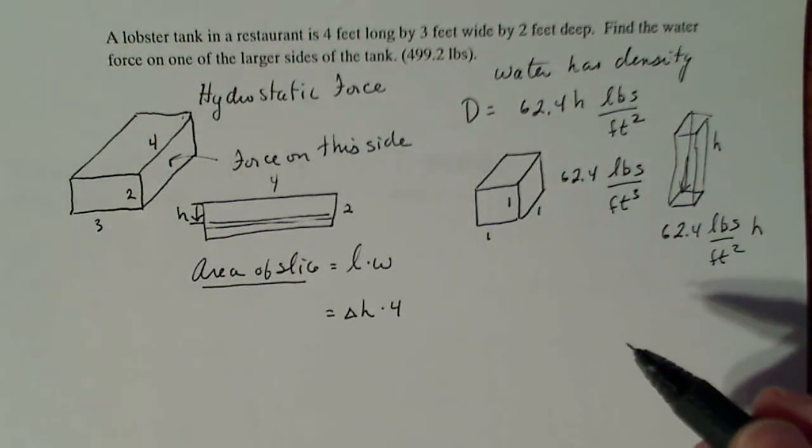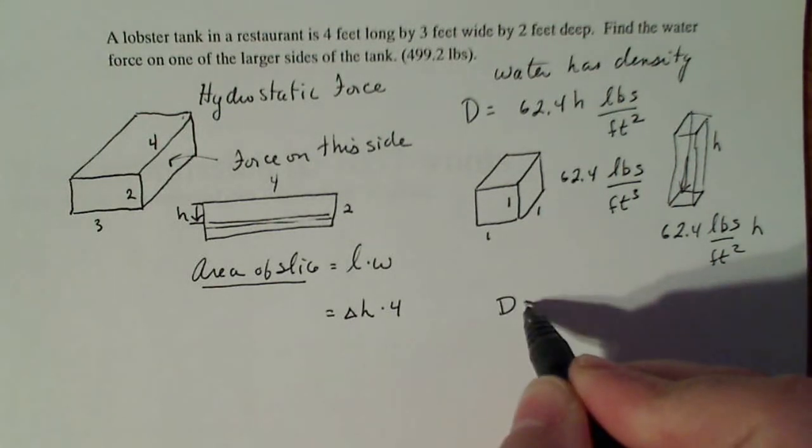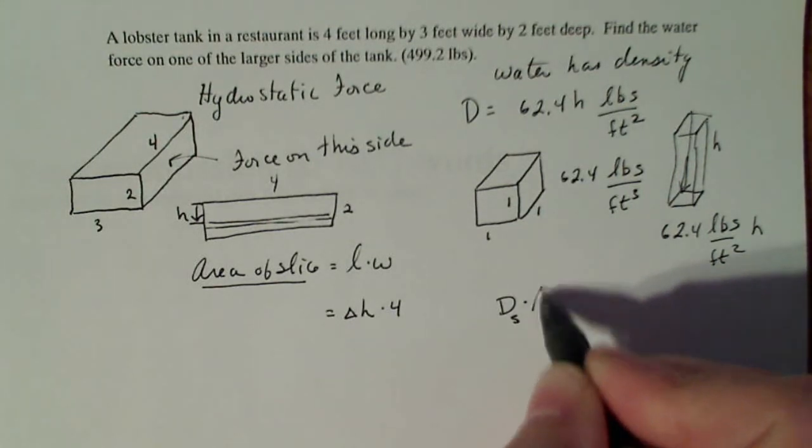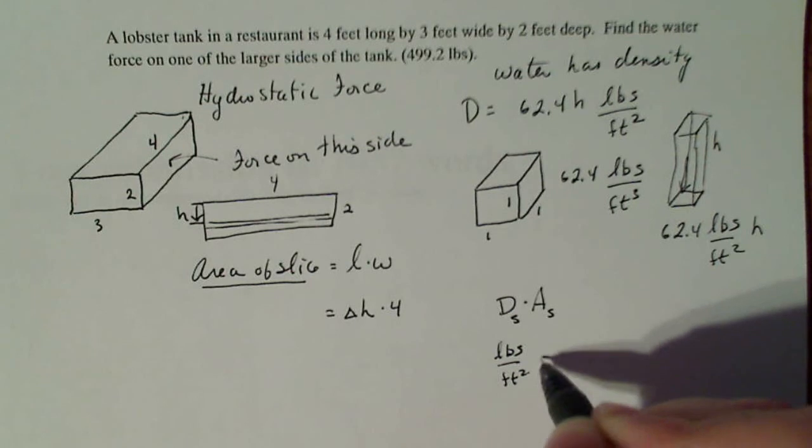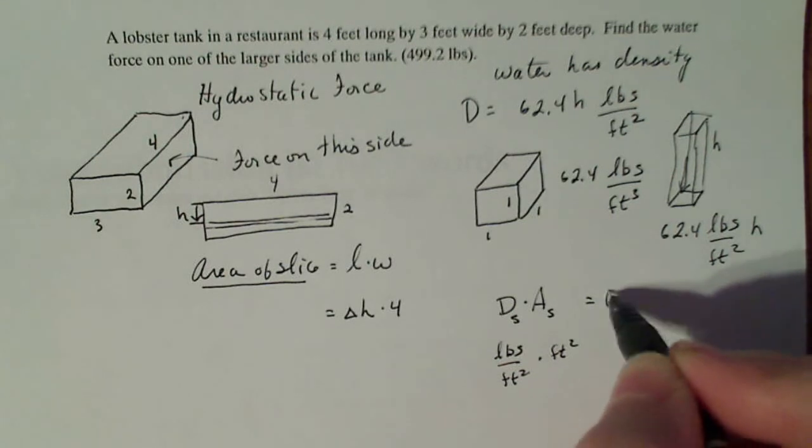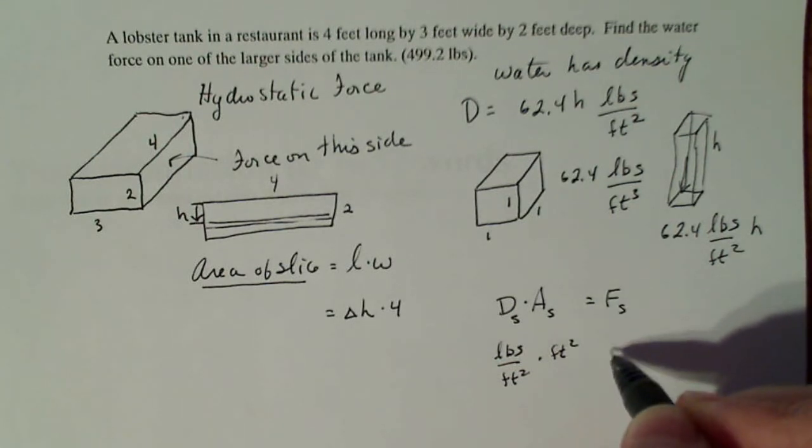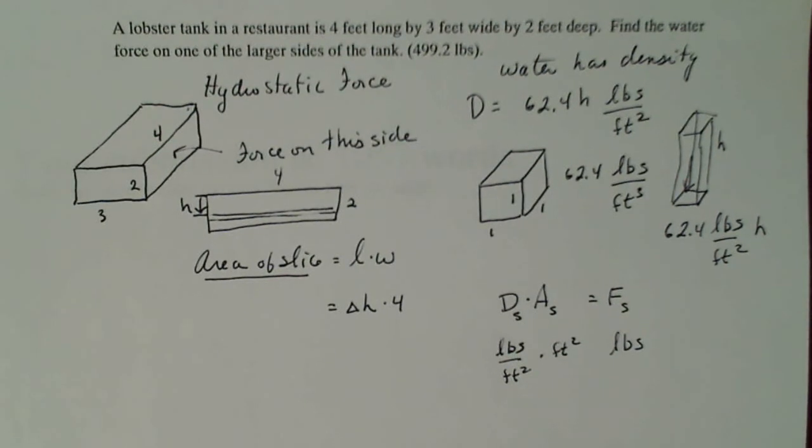So I know that if I take density of my slice times area of my slice, that's going to be pounds per square foot times square foot. And that'll give me then in the end, the force that I want on just my slice, which is pounds. Force is always measured in terms of pounds like weight. The amount of force that you have due to gravity is what your weight is in pounds.